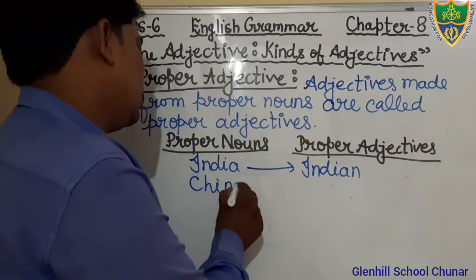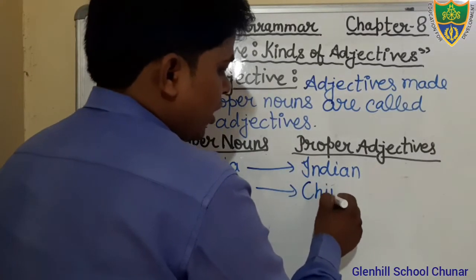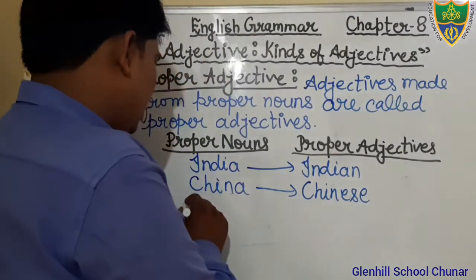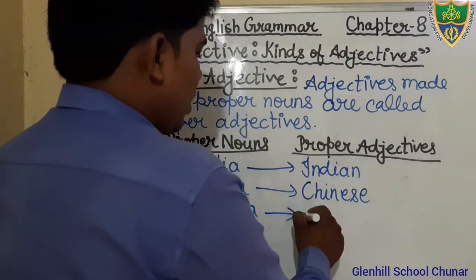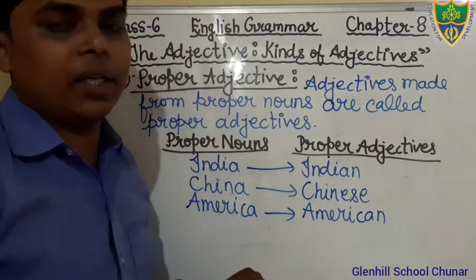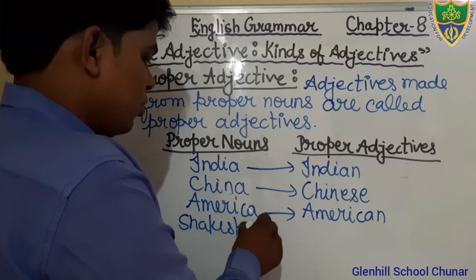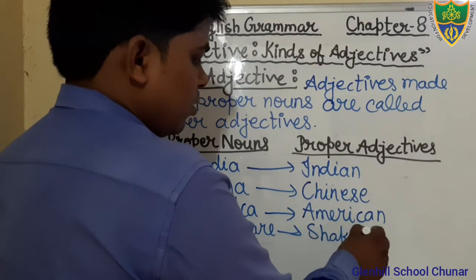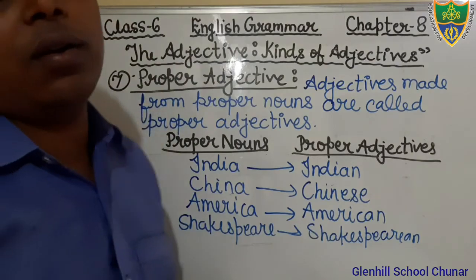China — China is the name of a particular country, so that is a Proper Noun. But Chinese is a Proper Adjective. America is a Proper Noun, but American is a Proper Adjective. Shakespeare is a Proper Noun, but Shakespearean is a Proper Adjective.